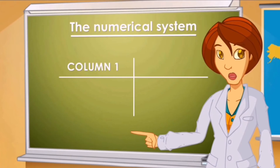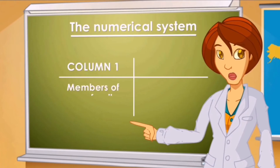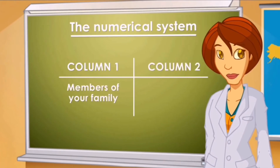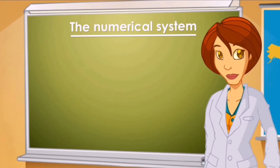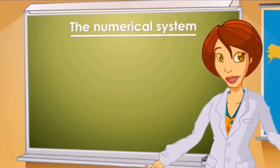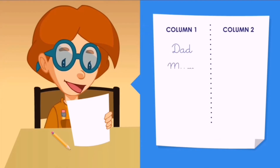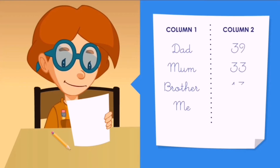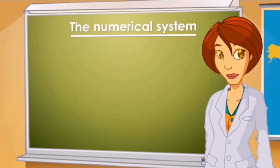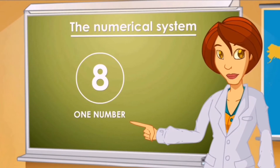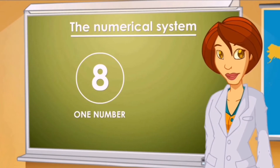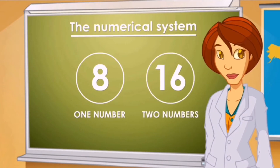Children, write down in the first column the members of your family, and in the second, their ages. Let's see, Matt. Who did you include in the first column? My dad, my mom, my brother, and me. I wrote 39, 33, 13, and 7. Some have only got one number — that is, only one figure — and others have two numbers, or two figures.